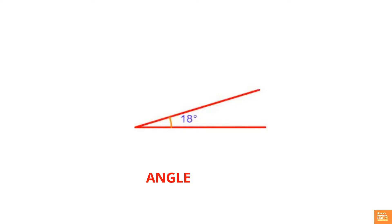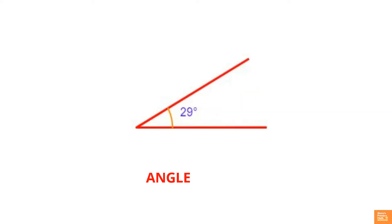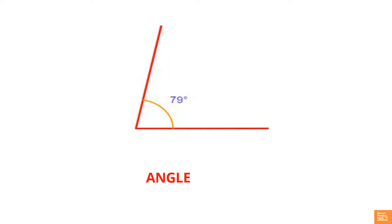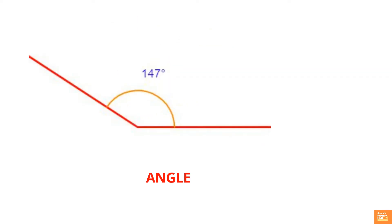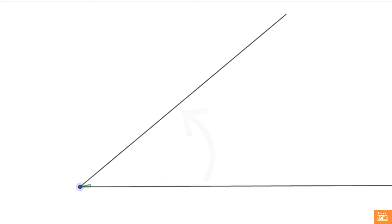Verbal explanations may not give a clear sense to these children. Hence, adopt activity methods to make them believe that the size of an angle is only determined by how much it has opened, or how big a part of an arc of the circle the sides have drawn.